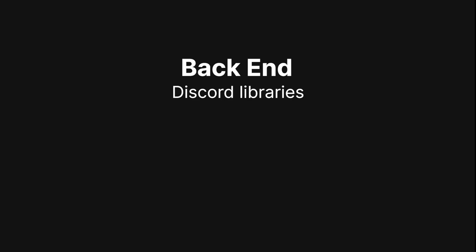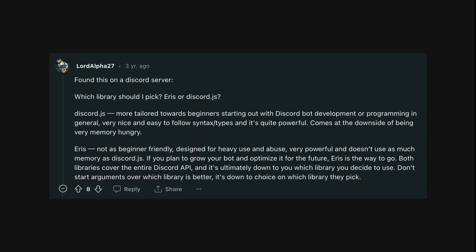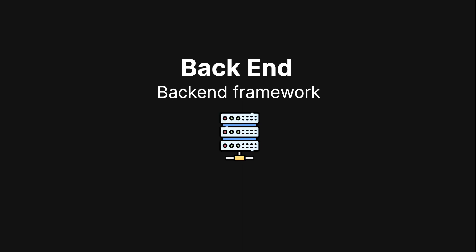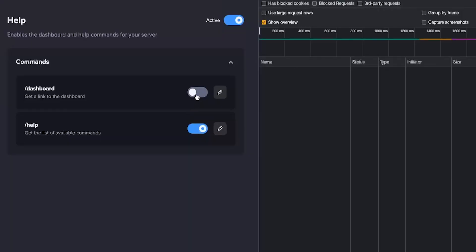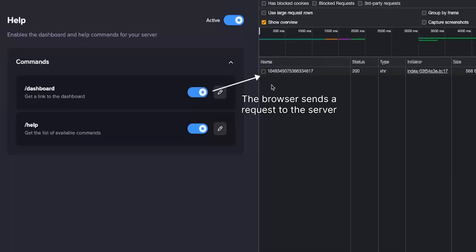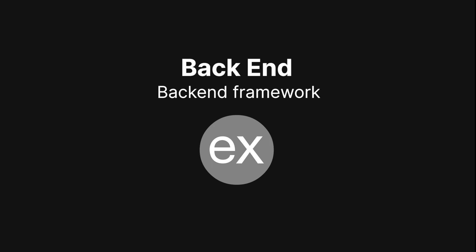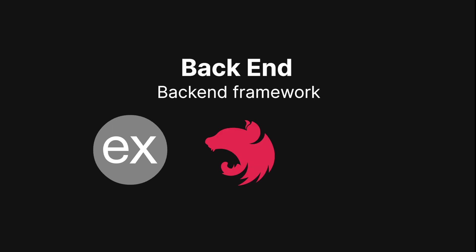Let's take a look at some back-end technologies, starting with Discord libraries. I personally like to use Discord.js, however that's not the only option — there's also a library called Aris which, according to a Redditor, is not as beginner-friendly but is designed for heavy usage. I highly recommend Discord.js to anybody getting into Discord bot development because of how easy it is to use. For a back-end framework — basically an API which your front-end sends requests to — I personally like to use Express.js. Popular alternatives also include Nest.js and Fastify.